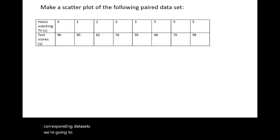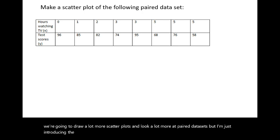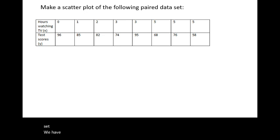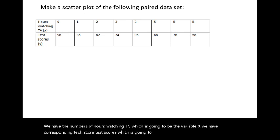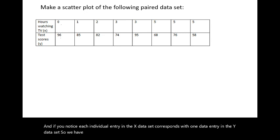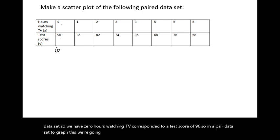We'll be doing scatter plots more extensively later in the course. For now, here is an example: hours watching TV (variable x) paired with corresponding test scores (variable y). The data becomes ordered pairs: (0, 96), (1, 85), (2, 82), (3, 74), (3, 95) — notice x-values can repeat — and (5, 68), (5, 76), (5, 58).